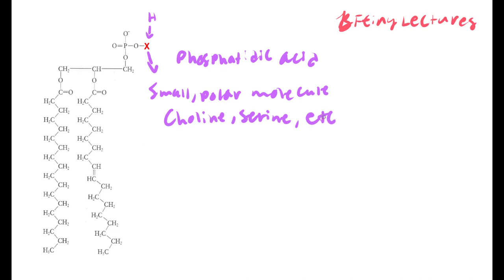On the exam, if you're asked what is the main component of the cell membrane, the answer would be a phospholipid. The answer choice could also be a diglyceride — diglyceride and phospholipid are the same thing, so both would be the correct answer.